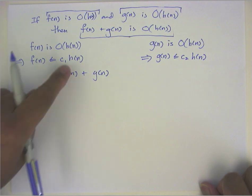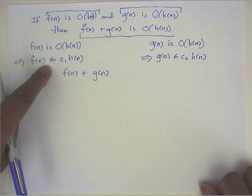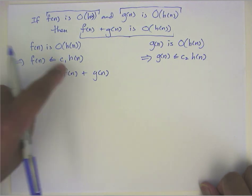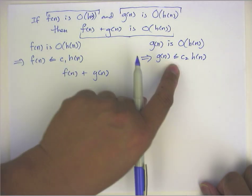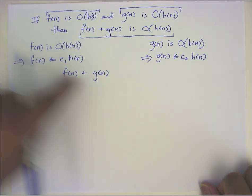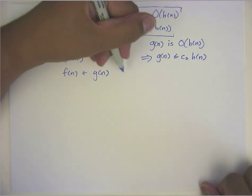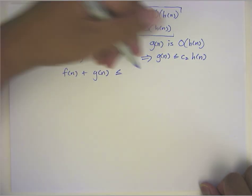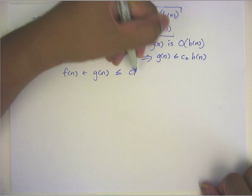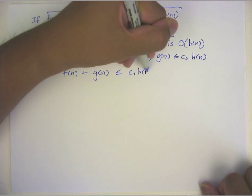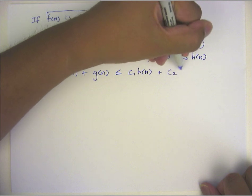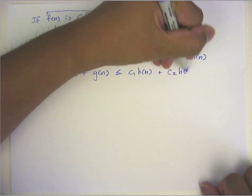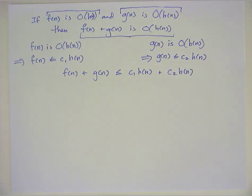And what we know is that f(n) is less than or equal to c1 times h(n), and g(n) is less than or equal to c2 of h(n). So the addition of these two things together is then less than or equal to c1 times h(n) and c2 h(n).